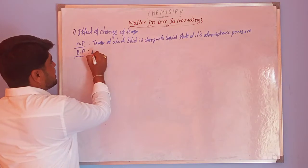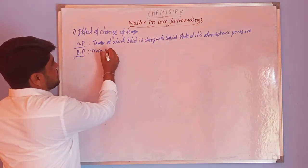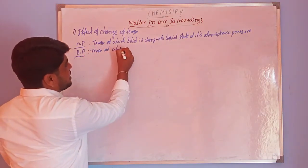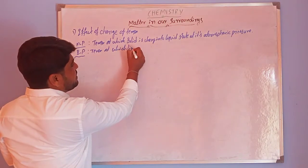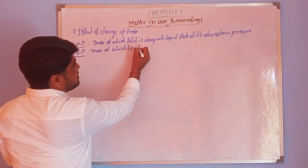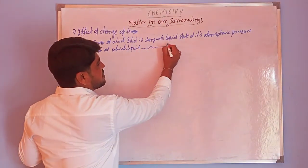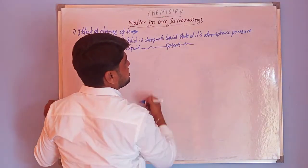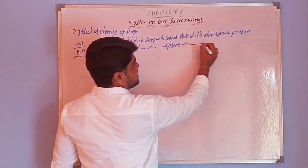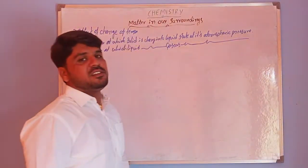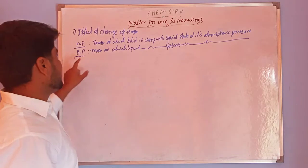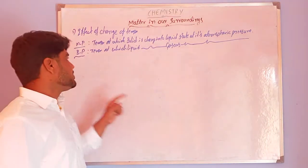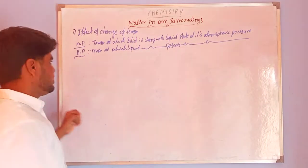Next is boiling point. Liquids have boiling points. Boiling point is the temperature at which a liquid changes into a gaseous state at its atmospheric pressure. That is what we call the boiling point.